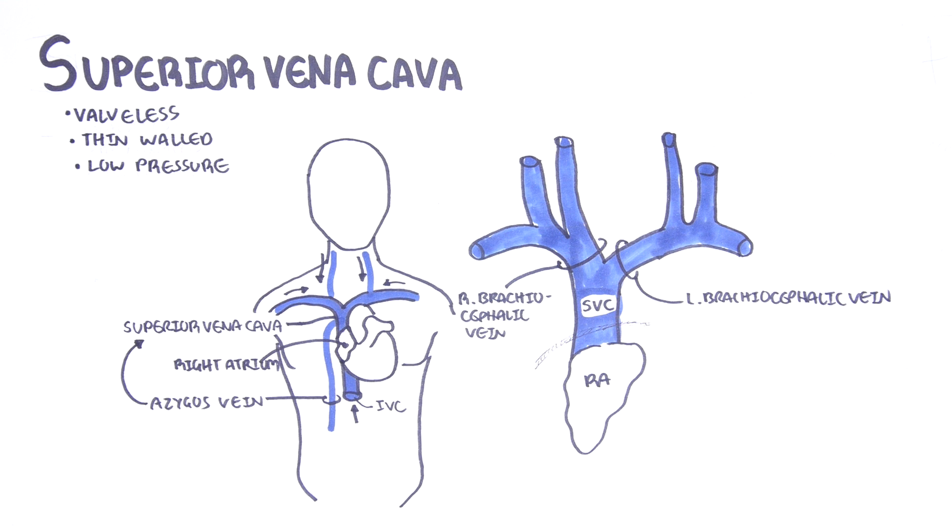The superior vena cava then drains into the right atrium. There are no valves in either the superior vena cava or the brachiocephalic vein.